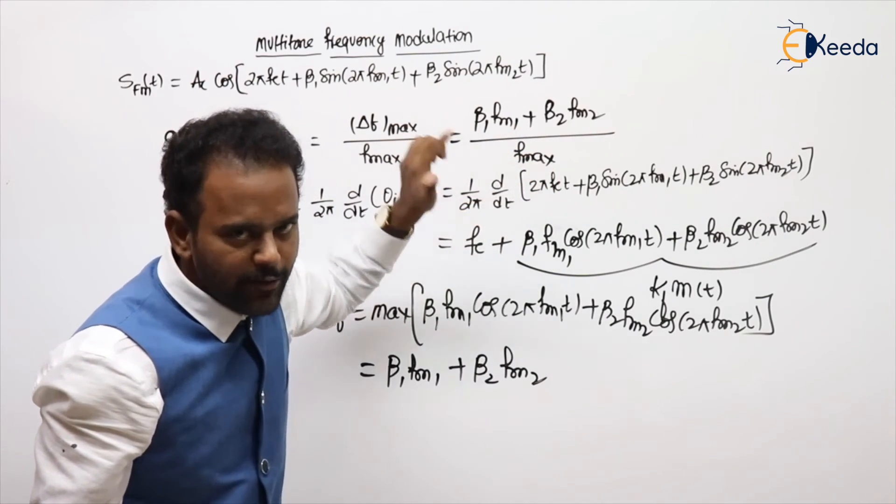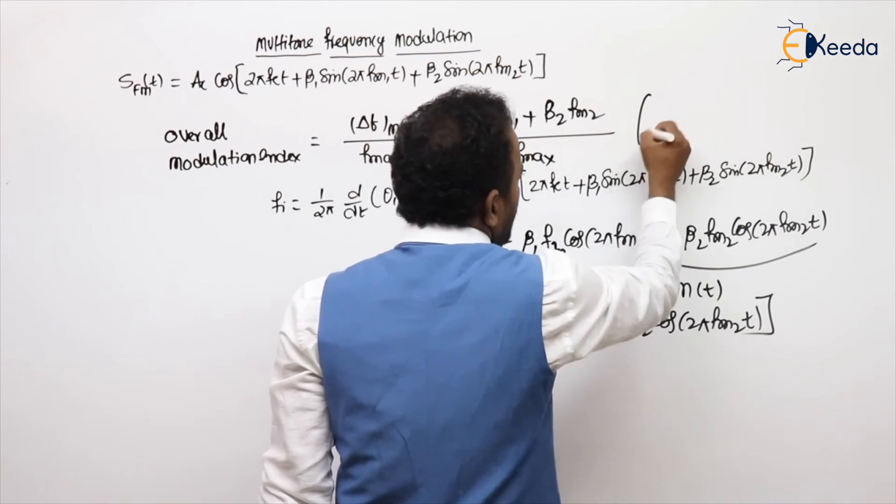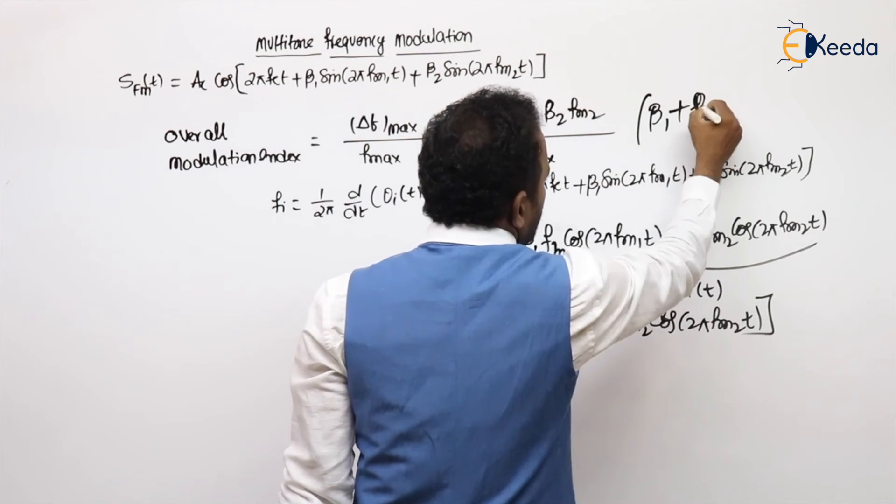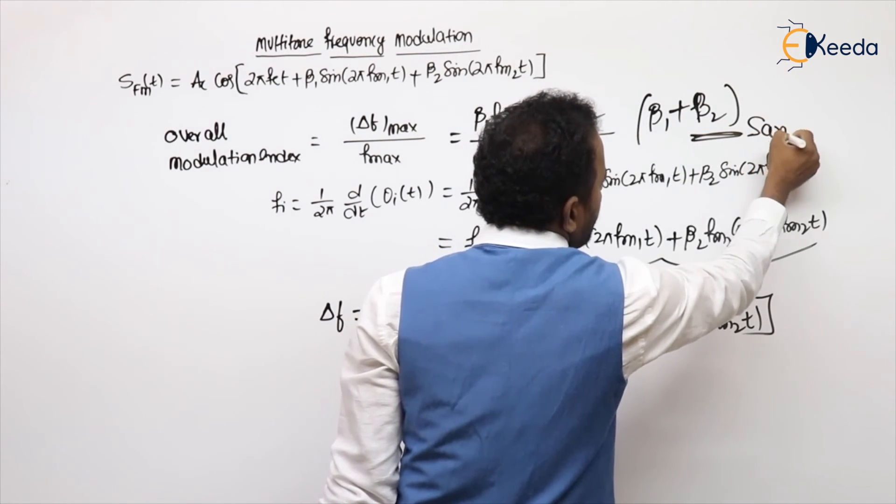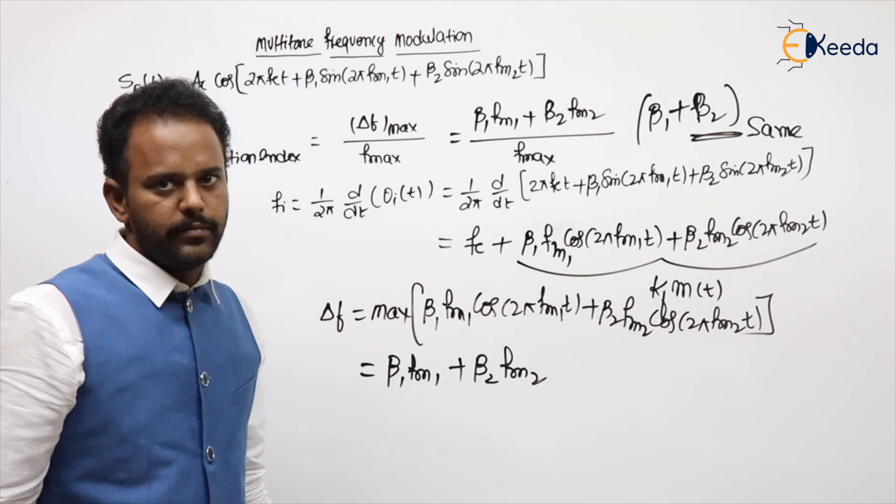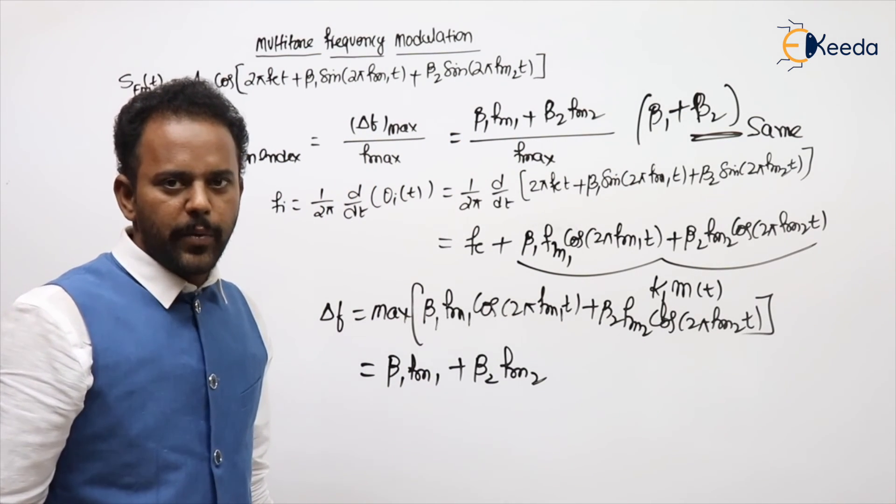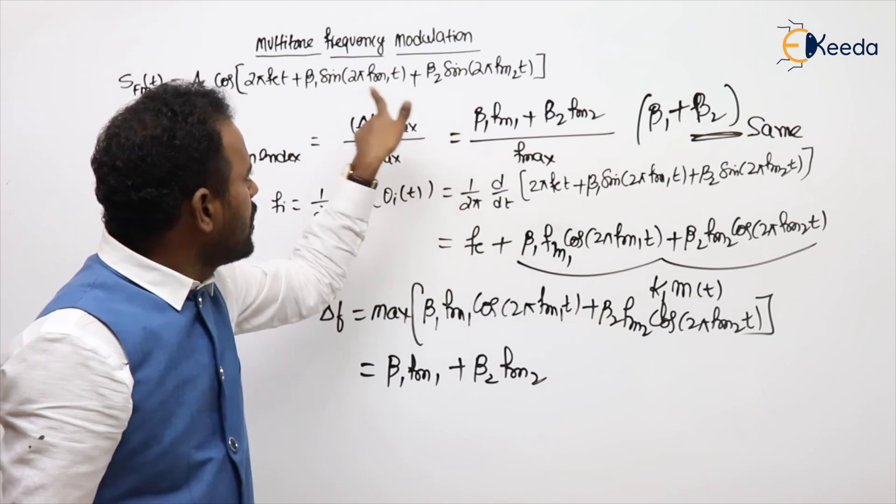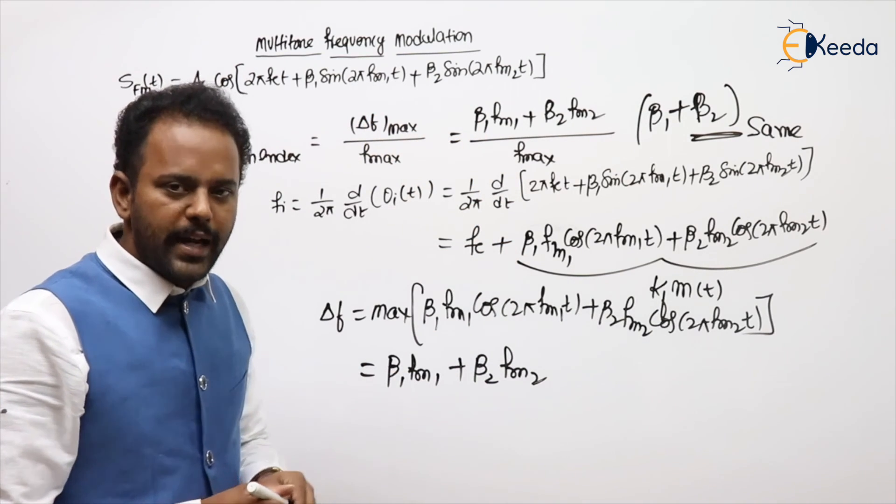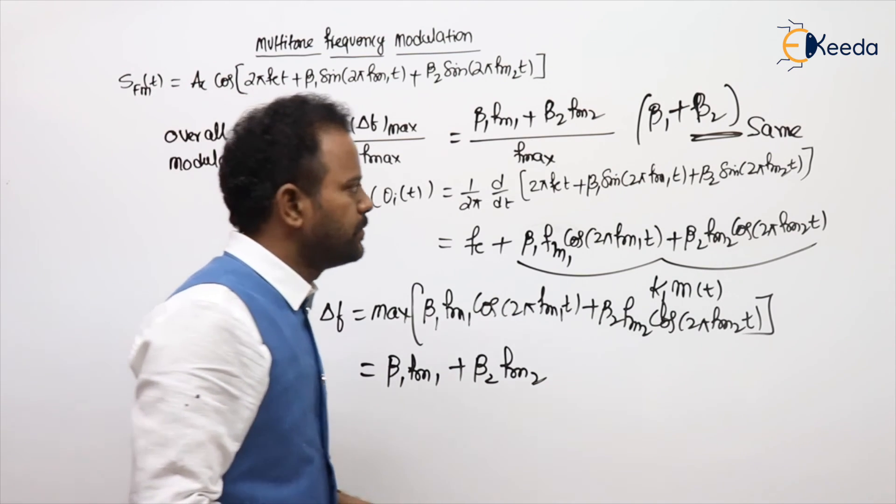Here f max also same, that will be cancelled. So what you will get? β1 plus β2, when? Same frequency. Got my point? So generally f max means out of these two, take the max value. Clear? Yeah.